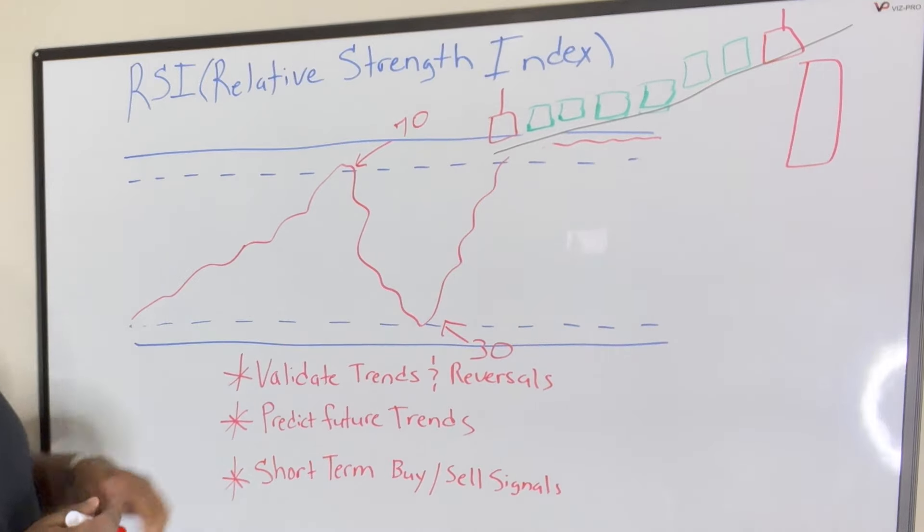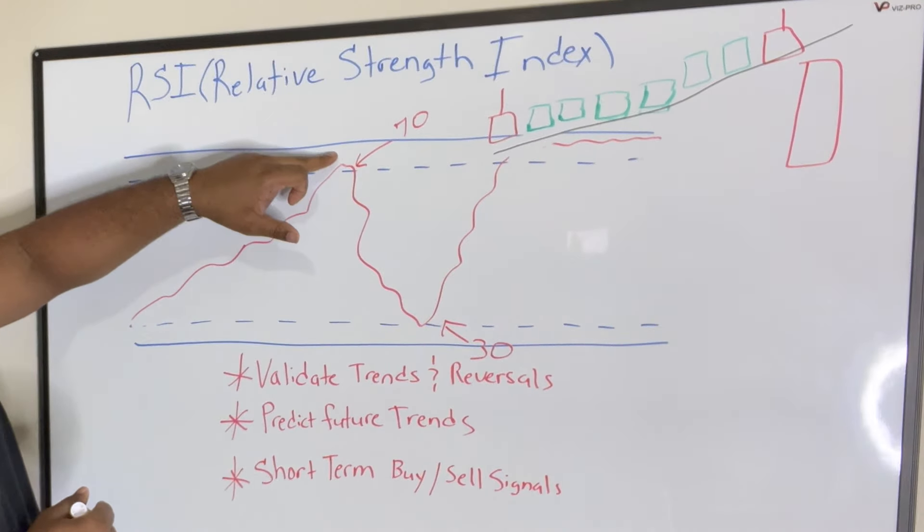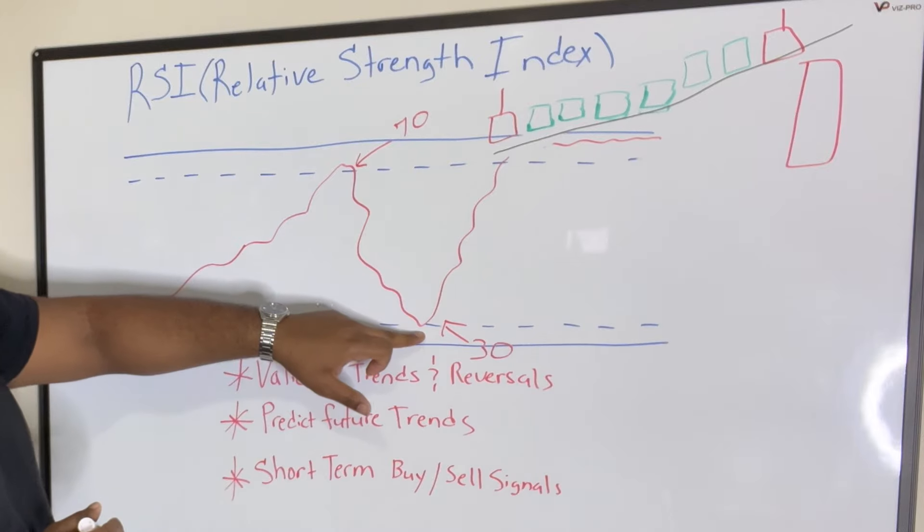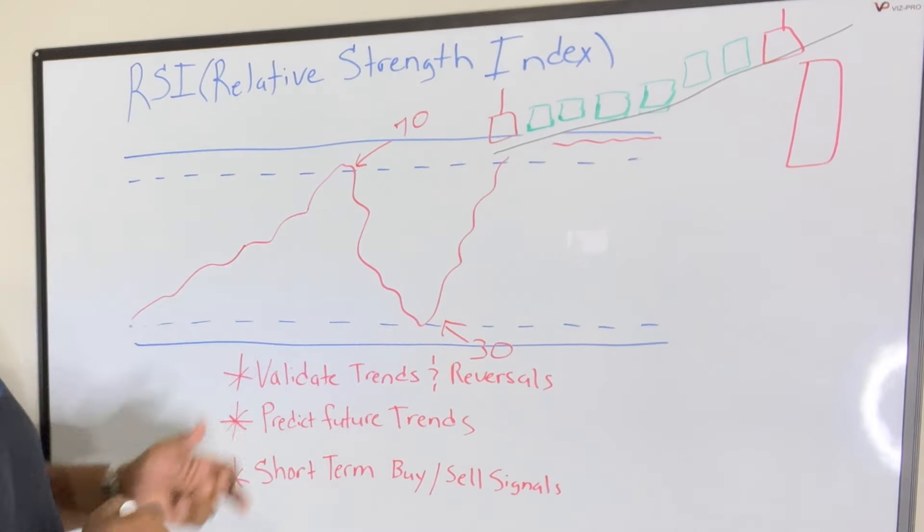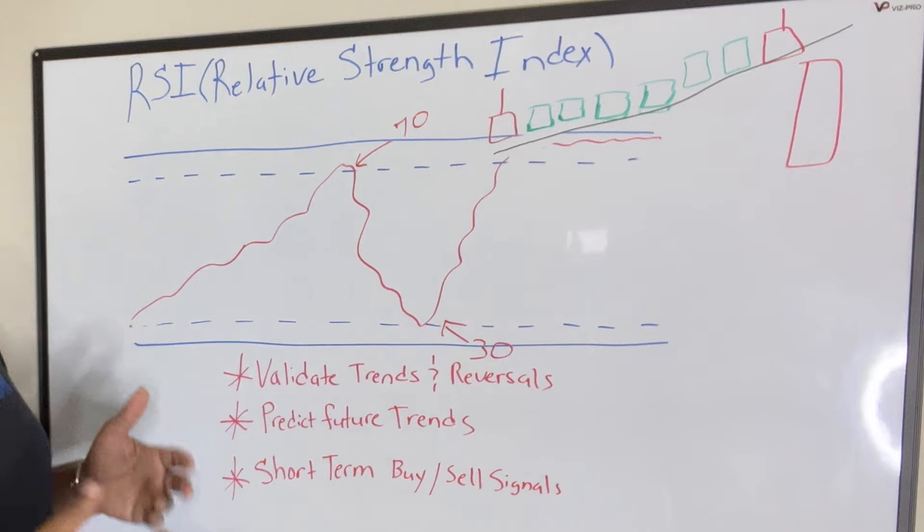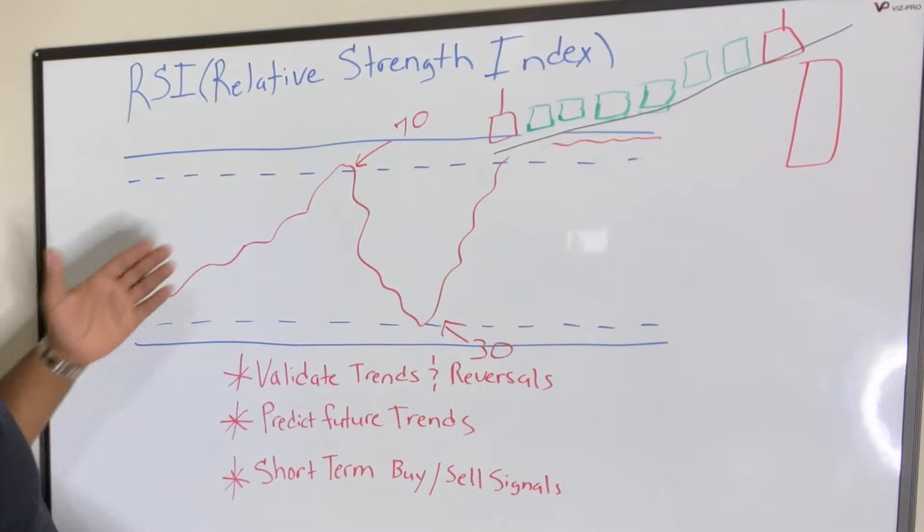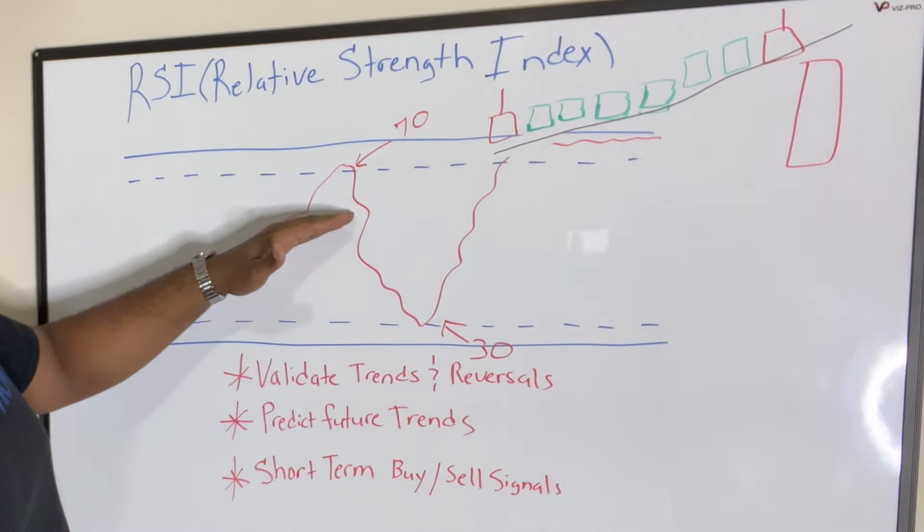Oversold is going to be at the 30 mark. It's kind of a lagging indicator but you'll have some momentum in here and you'll see it along with the candlesticks.